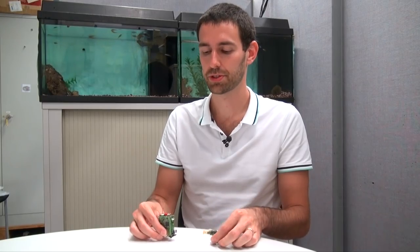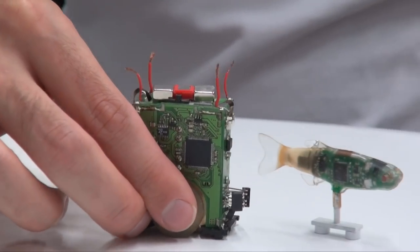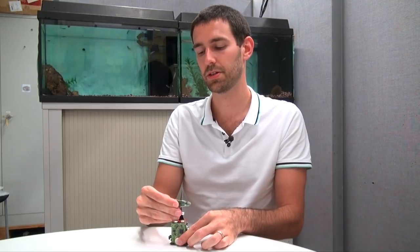This robot is composed of two modules. The first module is a real mobile robot that is moving underneath an aquarium. Then this robot is coupled with a lure and the robots steer the lure inside the aquarium.